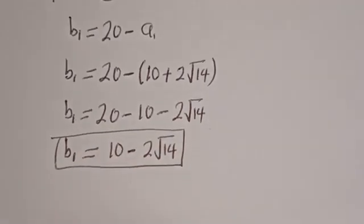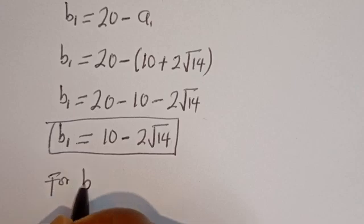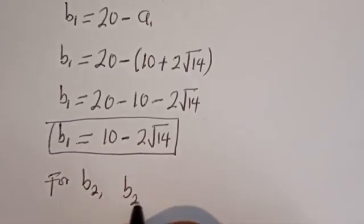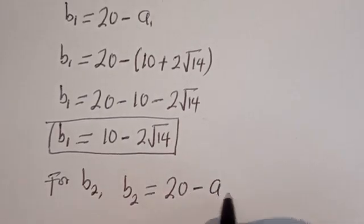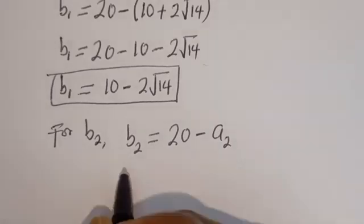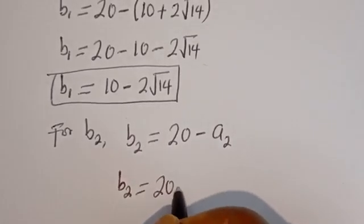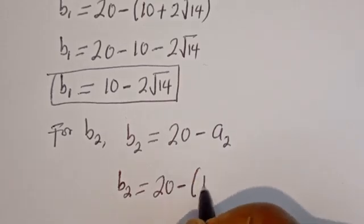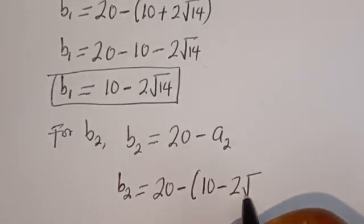Now to get B2: B2 equals 20 minus A2, which is 20 minus (10 minus 2 root 14), giving B2 equals 10 plus 2 root 14.